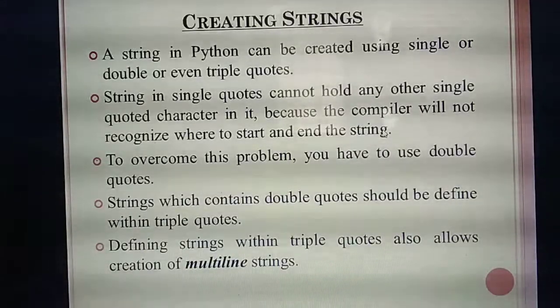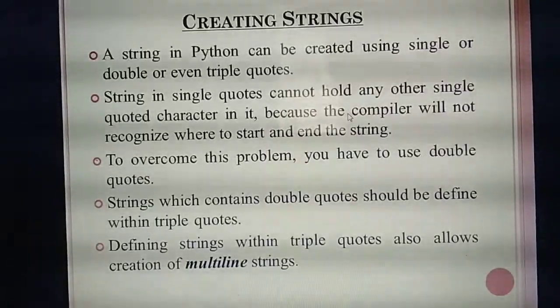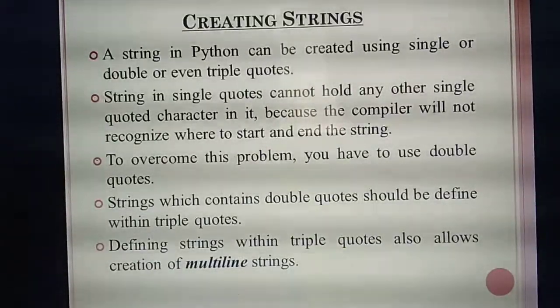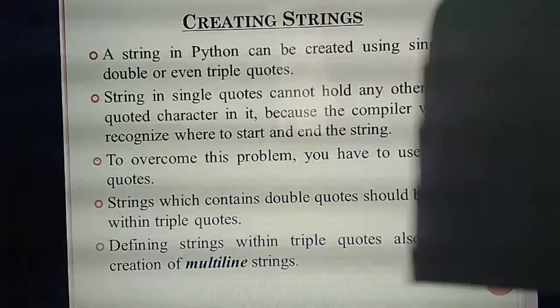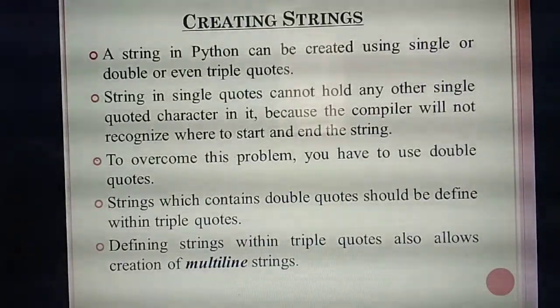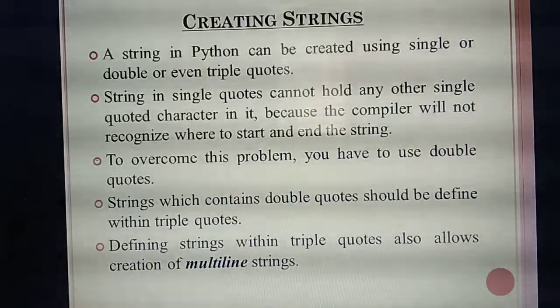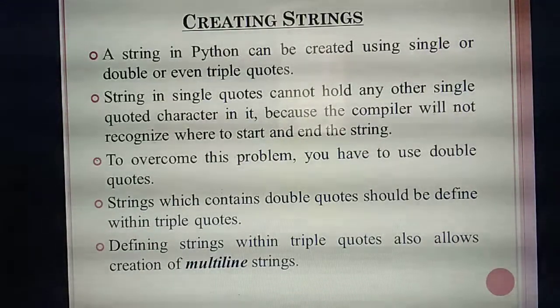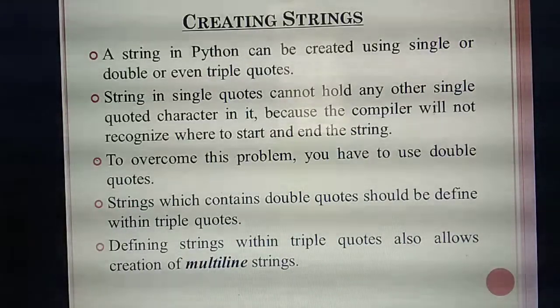Why do we use double quotes? If a sentence like 'it's raining' has an apostrophe between 'it' and 's', and you mention it in single quotes, the compiler cannot recognize where the string starts and ends. To avoid that, you use double quotes. If you are going to define more than one sentence — a paragraph of three or four lines — you use triple quotes.